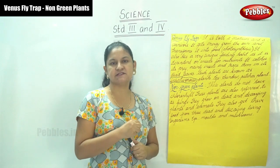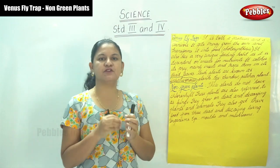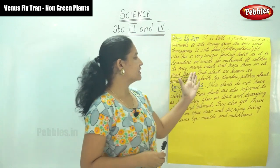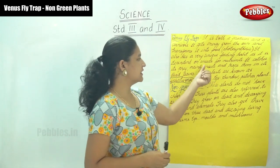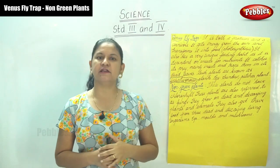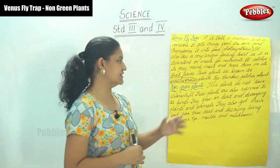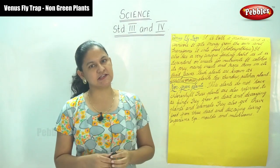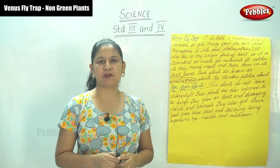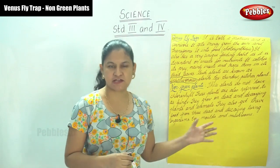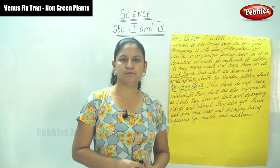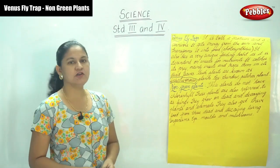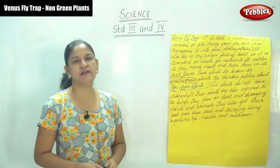It traps insects and keeps them between its leaves, and it is dependent on insects for its nutrients. Hence they are known as insectivorous plants. Examples are the sundew and the pitcher plant. Moving on, the next topic is non-green plants.